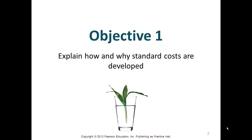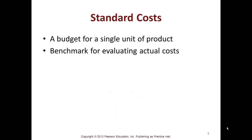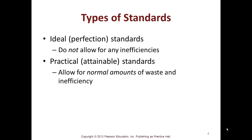The first objective is to explain how and why standard costs are developed. Standard costs are developed as a budget for a single unit of product, to serve as a benchmark for evaluating actual costs. The types of standard costs are: ideal or perfection standards, which don't allow for any inefficiencies and are really impractical; and practical, attainable standards, which allow for normal amounts of waste and inefficiency.